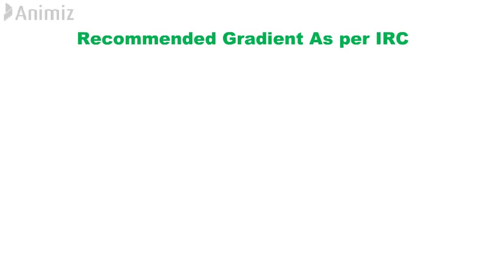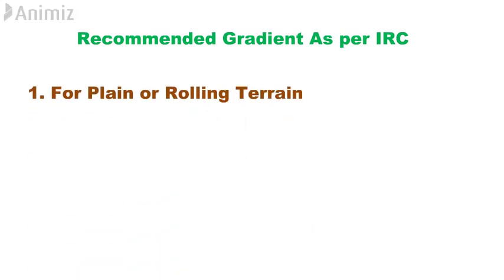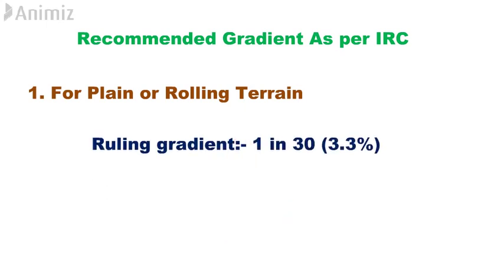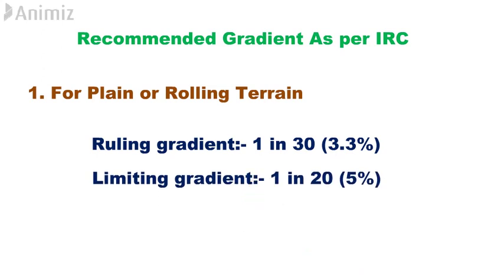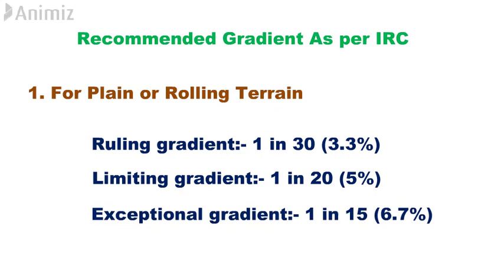Recommended gradient as per IRC. 1. For Plane or Rolling Terrain: Ruling gradient is 1 in 30, i.e., 3.3%. Limiting gradient is 1 in 20, i.e., 5%. Exceptional gradient is 1 in 15, i.e., 6.7%.